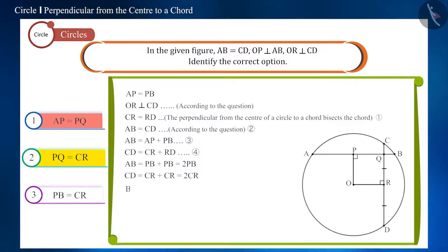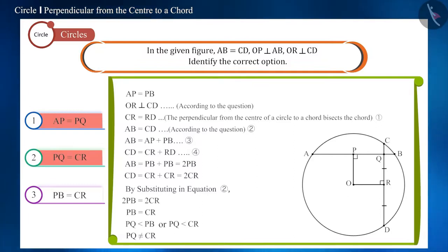And we are given that AB and CD are equal. So, we can say that PB is equal to CR. In the figure, you can see that point Q is located on PB. That is, PQ is smaller than PB. Therefore, PQ cannot be equal to CR. This means this option is also incorrect.